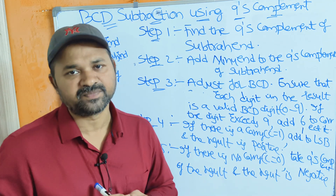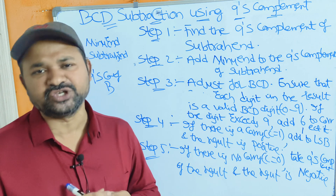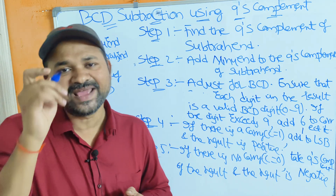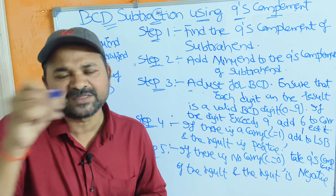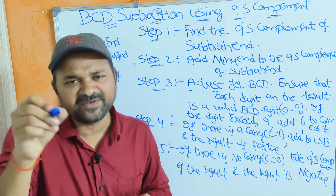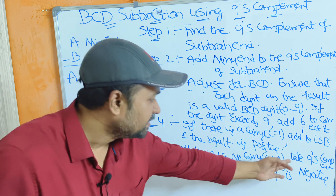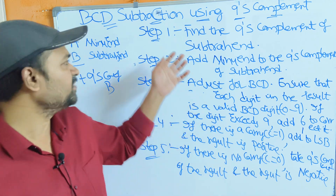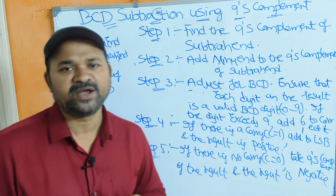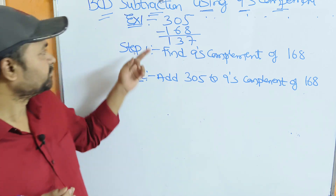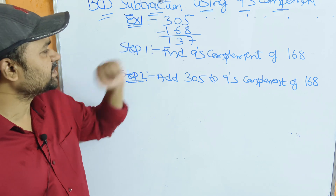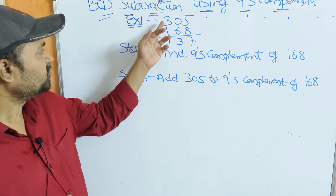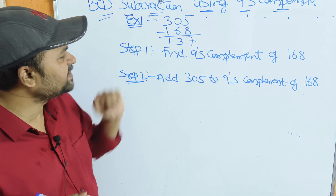So if there is no carry, that means if the carry is equal to 0, then the result is a negative number. We have to prefix the number with a minus symbol and take the 9's complement of the result. Now let us see the first example. Here the first number is 305 and the second number is 168. So what is the result of 305 minus 168?